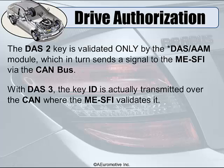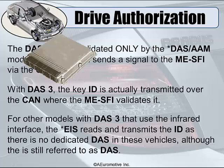In DOS 3, the key ID is actually transmitted over the CAN where the ME SFI validates it. For other models with DOS 3 that use the infrared interface, the EIS reads and then transmits this ID, as there is no dedicated DOS in these vehicles — although it is still referred to as DOS.